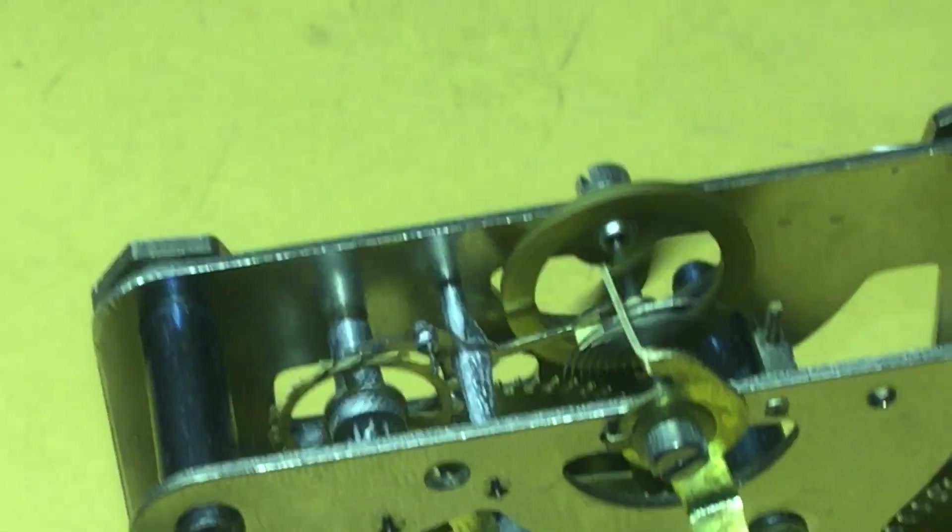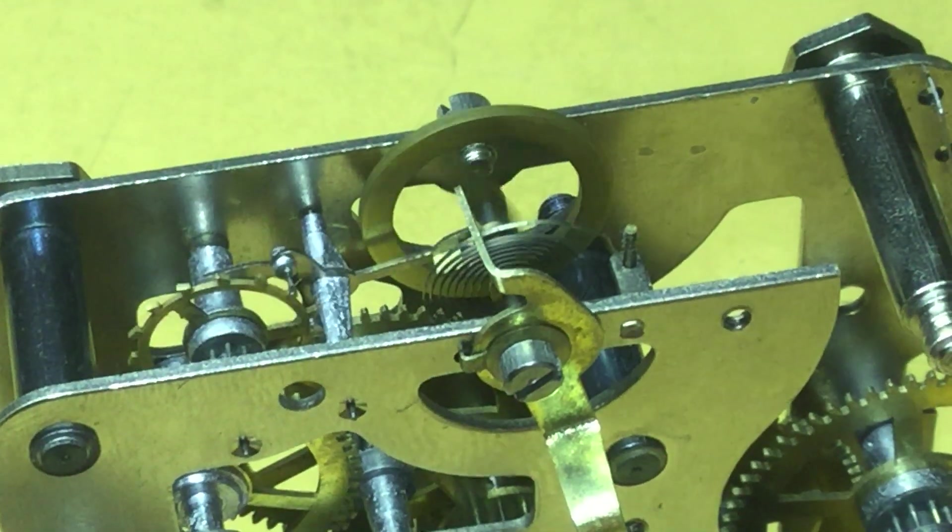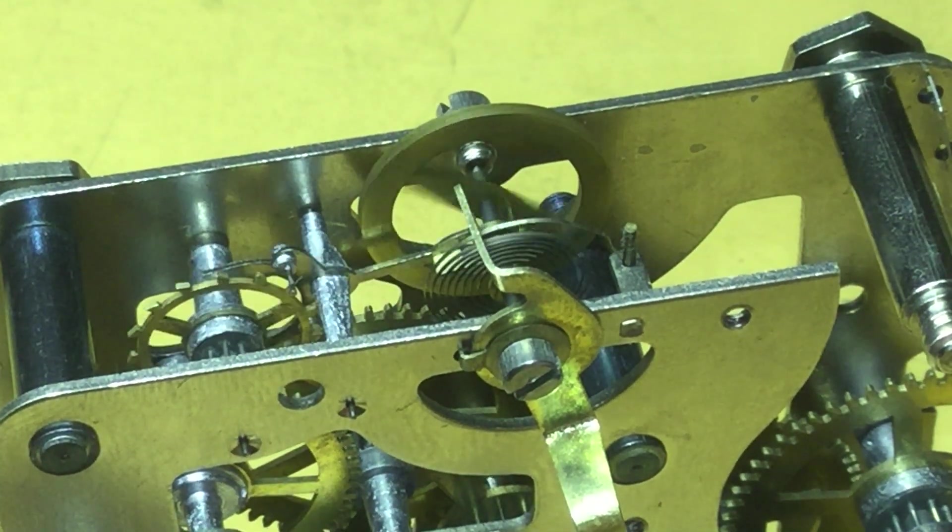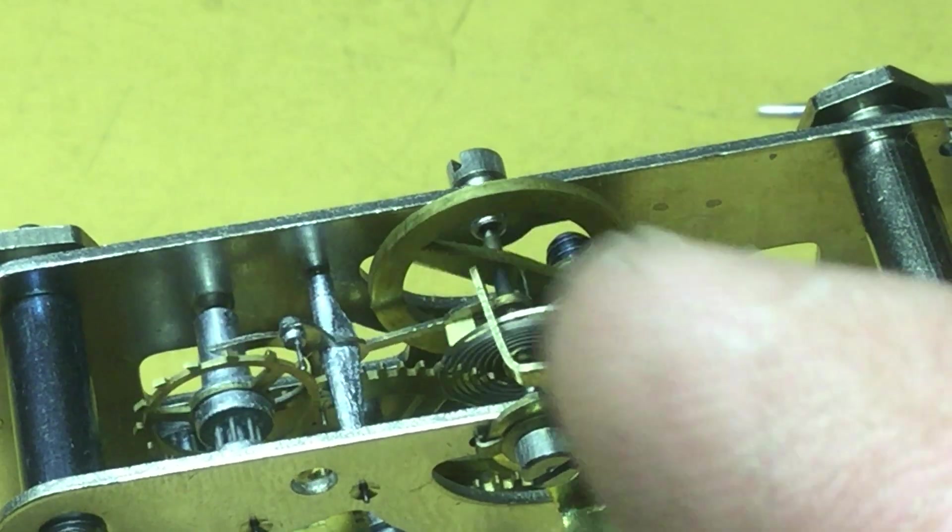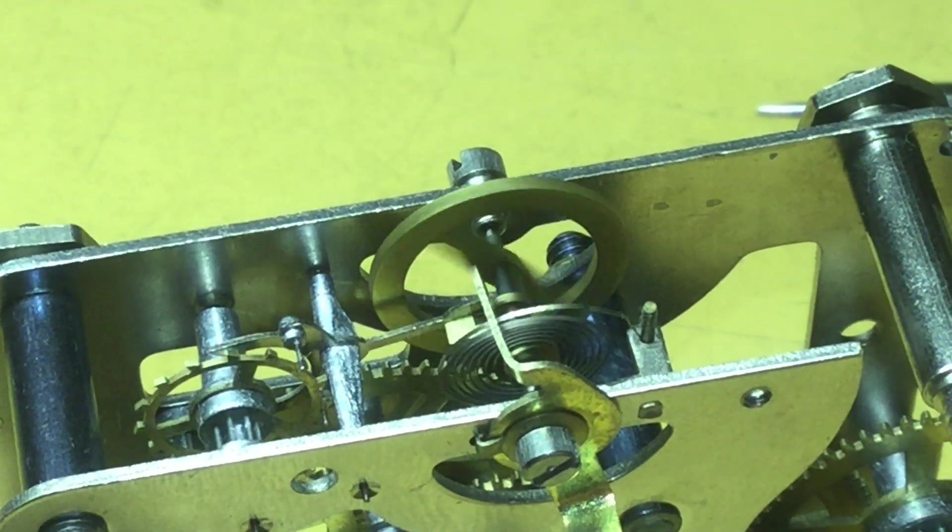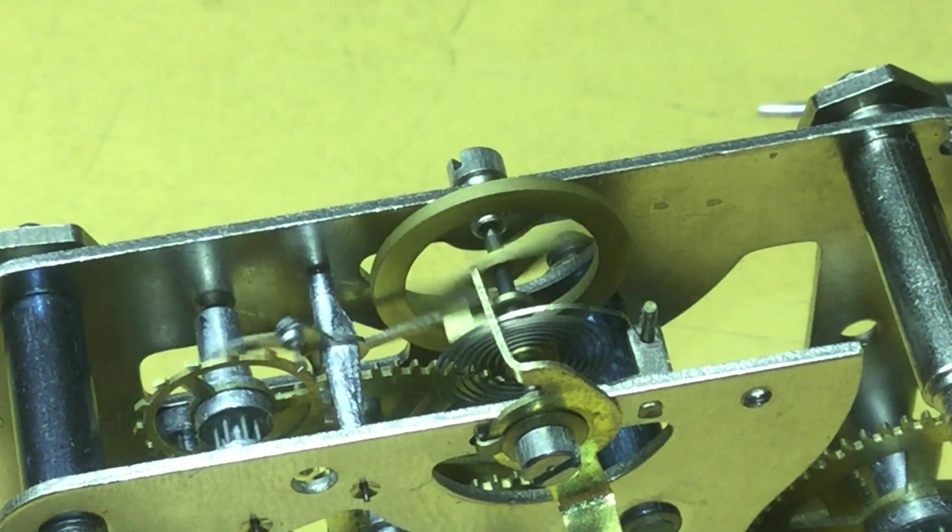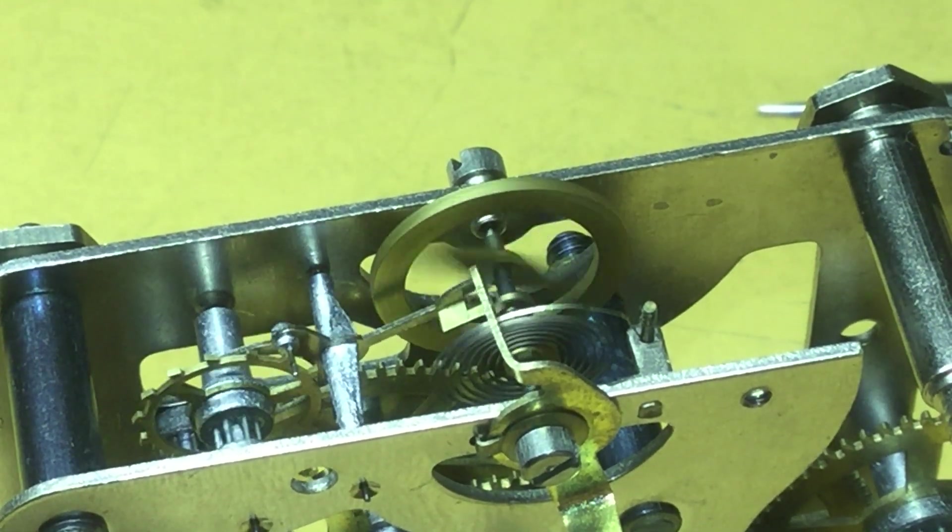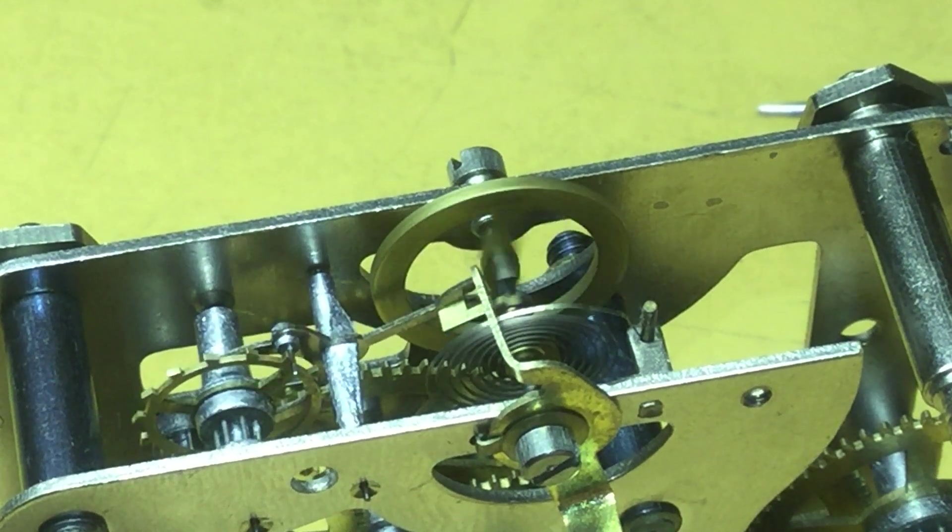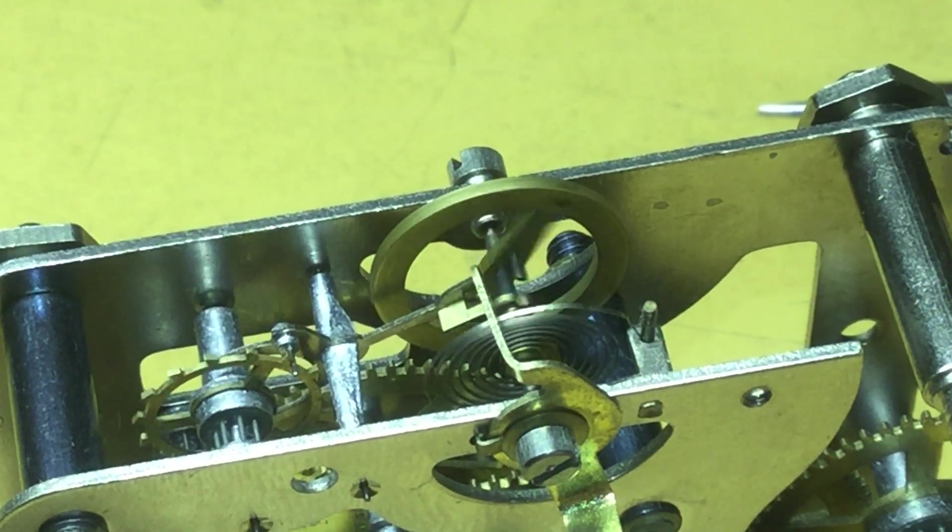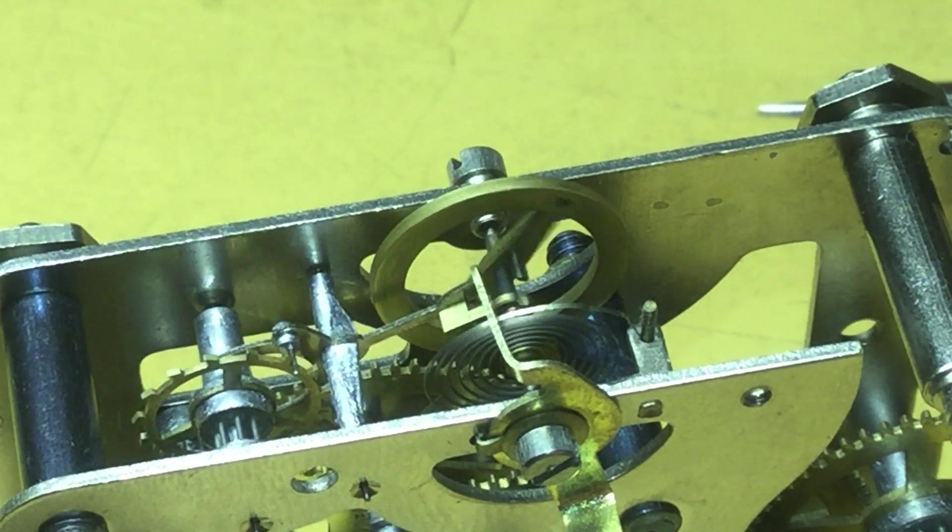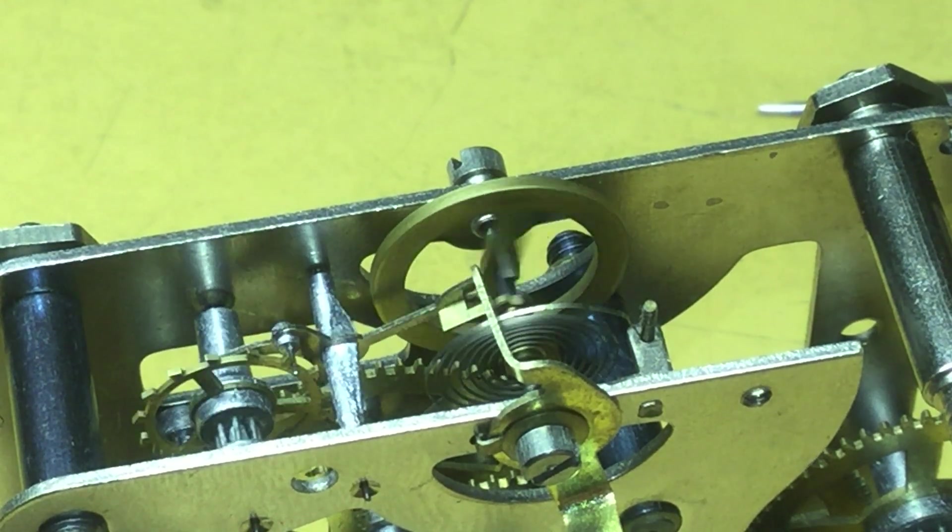All right, anyway, that's enough for this part. You can see that the movement is running. I might put another balance wheel in this with a different hairspring, rather than try to correct this one. We'll just see. So join me on the next part to see what I do, or if I do anything at all. This is Oklahoma Bridges, thanks for watching.